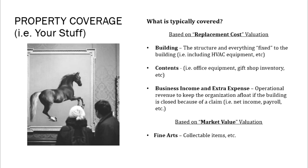When you look at property insurance, there are four general things covered. First, your building — the structure and everything fixed to it, such as HVAC equipment and lighting. A common example: if you could pick your building up, turn it upside down, and shake it, everything that falls out is your contents or fine arts, and everything fixed that doesn't fall out is your building. You also have contents, business income, and fine arts.